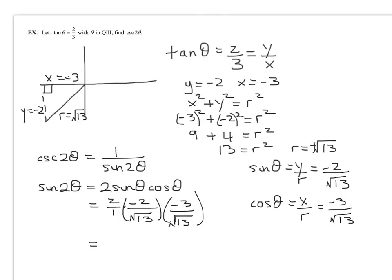And so now, a negative times a negative is a positive. So I have two times two is four. Four times three is 12. Over the square root of 13 times the square root of 13 is 13. So that's the sine of two theta.